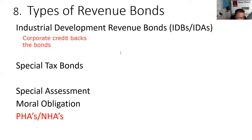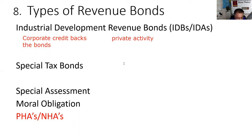Lone Tree, Colorado is also financed this way. The city of Denver said to Schwab, how about we build you a campus where 4,000 Schwab employees can work every day. Lone Tree Colorado's credit is not on the bond — it's Schwab's corporate credit backing those bonds. The second test question: what's being financed here is a private activity, and the major beneficiary of the bonds is Boeing, Schwab, or whoever.